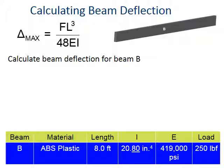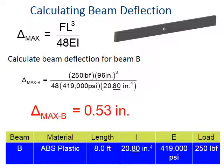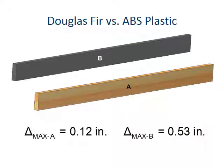Let's look at board B, the plastic board. We plug in the values and get a deflection of a little over half an inch. Let's compare: beam A the wood beam got 0.12 inches, beam B the plastic beam got 0.53 inches. Let's do a sanity check - does that jive with our experience? I think it does.